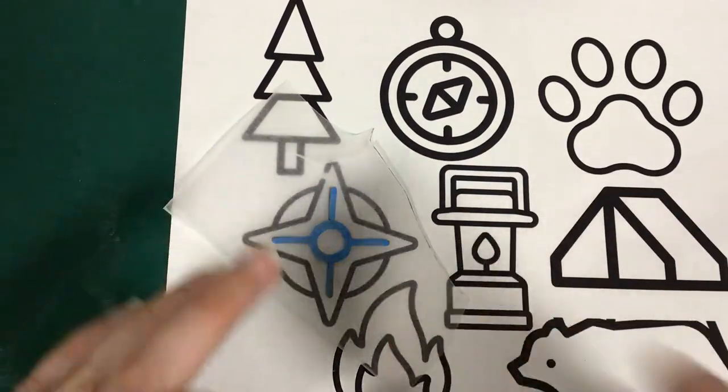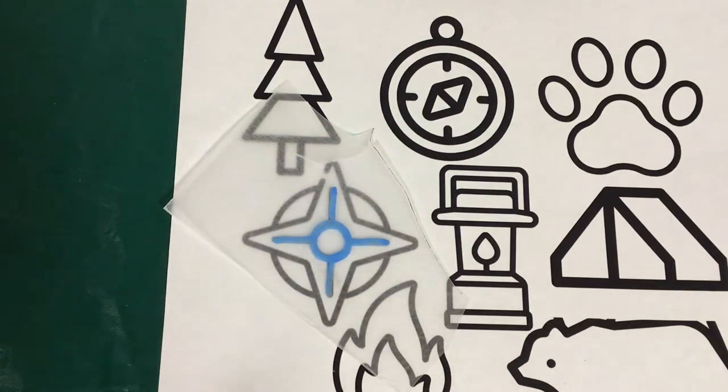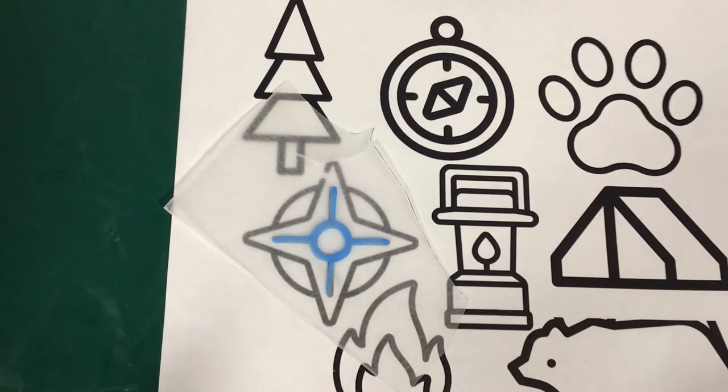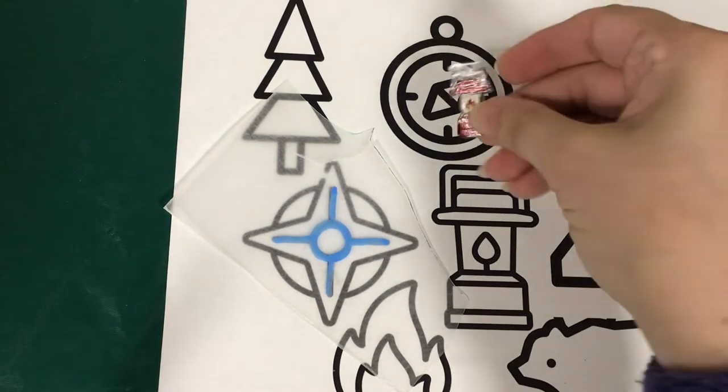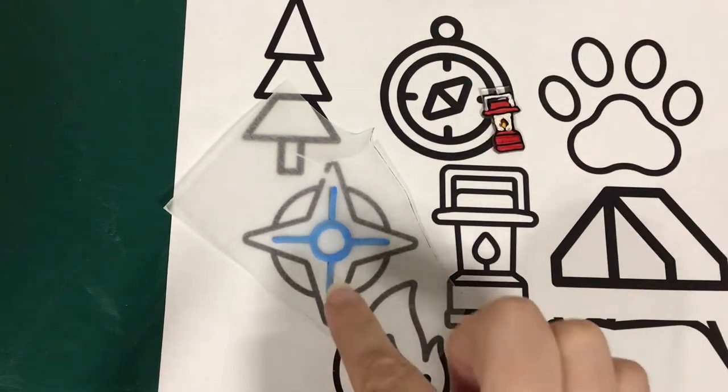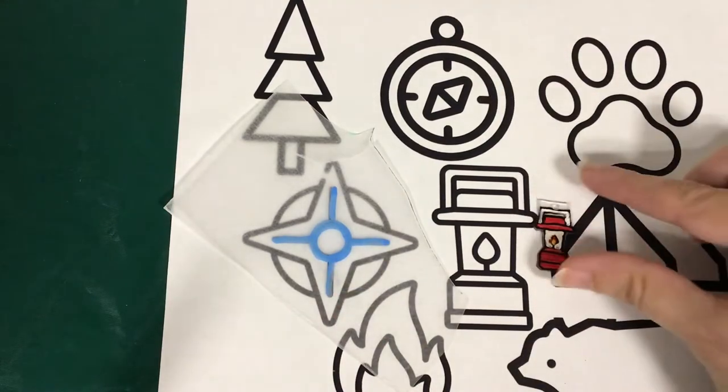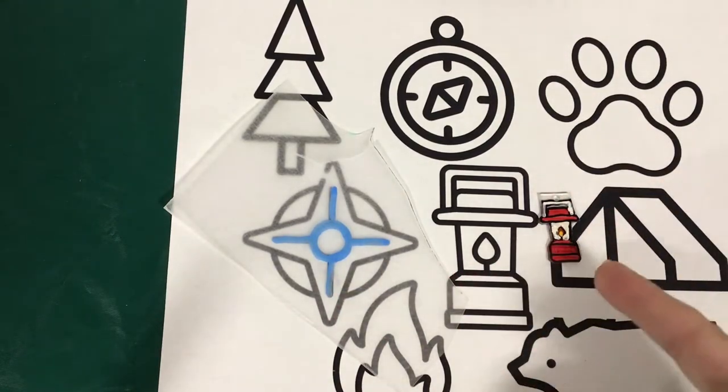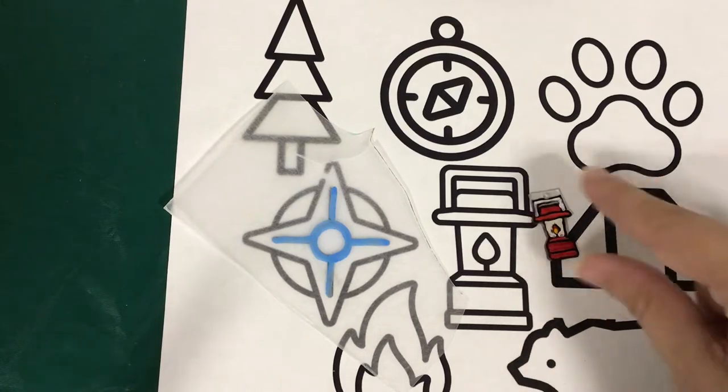The reason these are so big is because shrinky dinks, as you can guess, shrink. So when you want to make something this size, you've got to start with something three times the size of it. So you see, you're going to color something this big in order to get something this big.